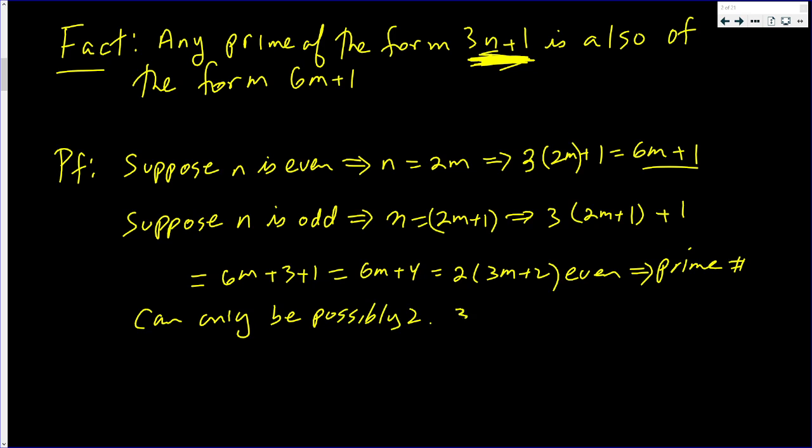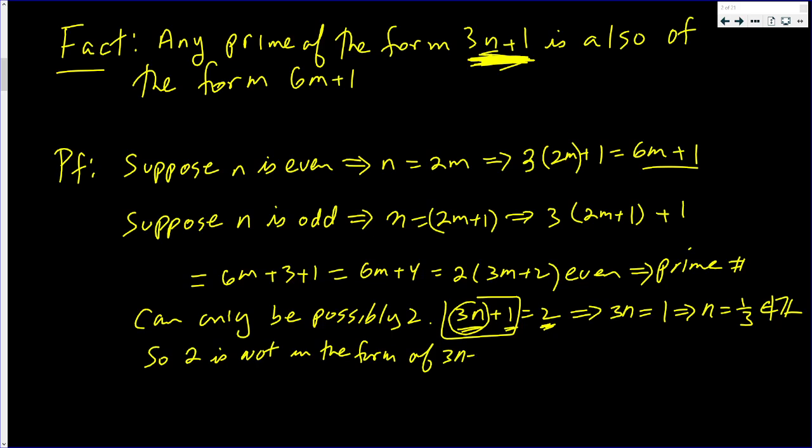Well, if 3n plus 1 is 2, then 3n is 1, because everyone knows that 1 plus 1 is 2. That implies that for 2 to be in this form, n is not an integer. So 2 is not in the form of 3n plus 1. If n is odd, there are no prime numbers of this form.